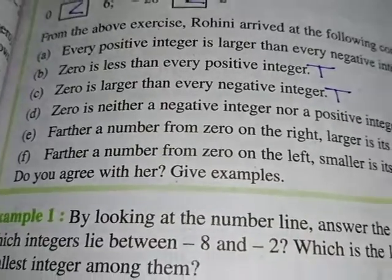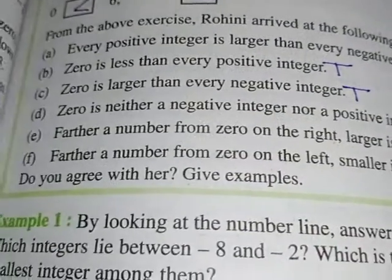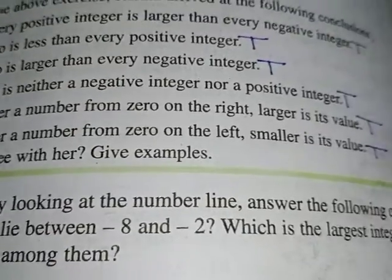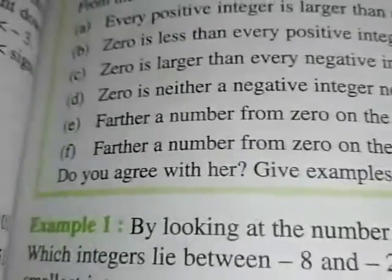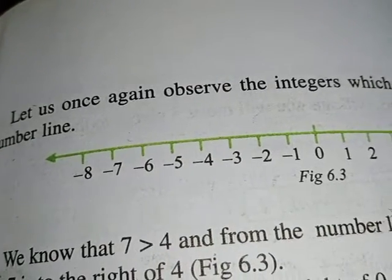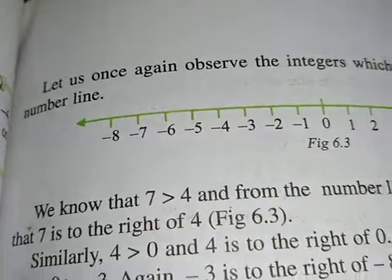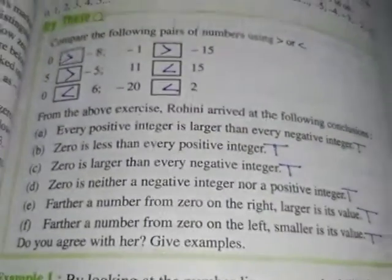Any number far away, larger is its value. Farther the number from zero on the left, smaller is its value. This is also correct - the more far away a number is from zero on the left, its value will decrease. So all these points are clear, I suppose.